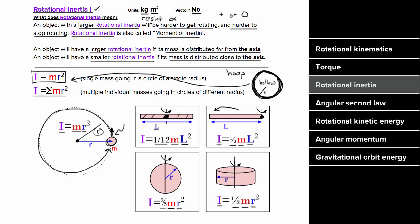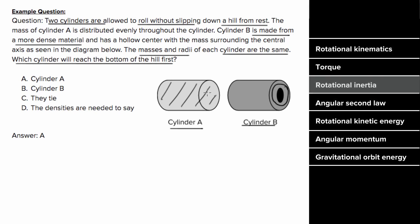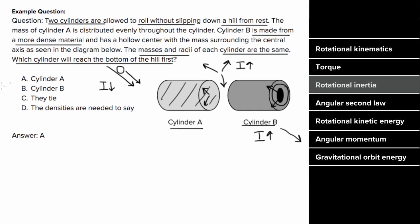Example: two cylinders roll without slipping from rest down a hill. Cylinder A has mass distributed evenly throughout; cylinder B is hollow at the center with mass distributed around that hollow center. Same mass and radius. Which reaches the bottom first? The cylinder with the least moment of inertia rotates more easily and rolls faster. Since cylinder B has its mass distributed farther from the axis, it has a larger moment of inertia, is harder to rotate, and cylinder A wins.